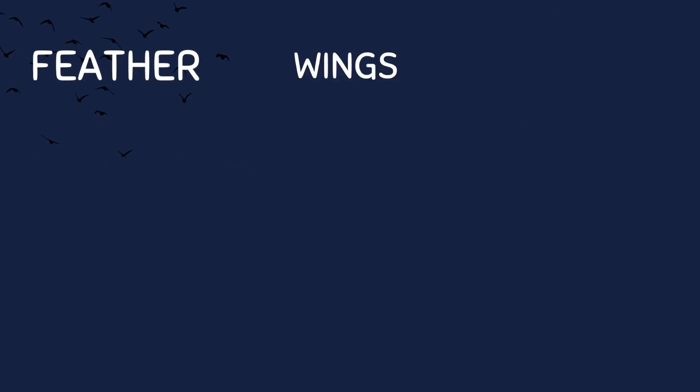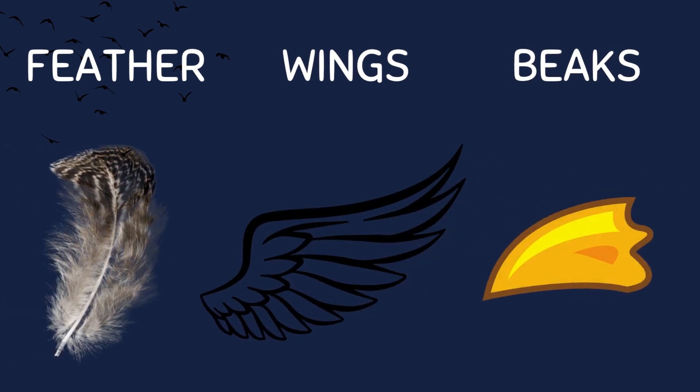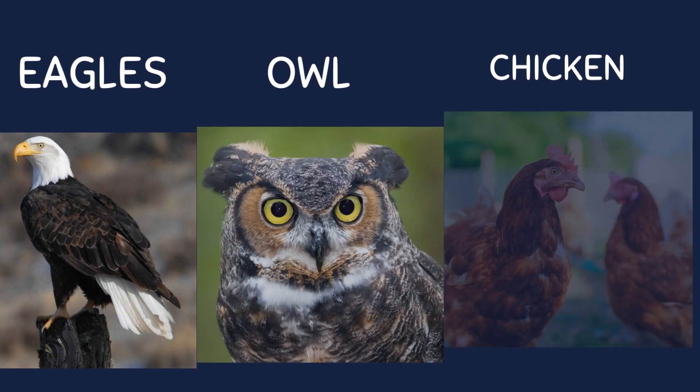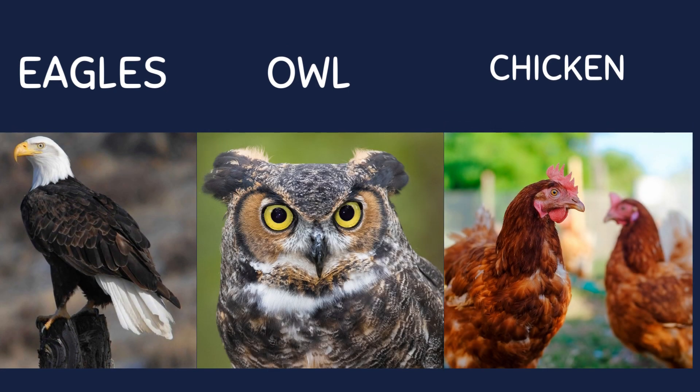Birds are a group of animals that have feathers, wings, and beaks. They lay eggs and are known for their ability to fly. Some common examples of birds include eagles, owls, and chickens.